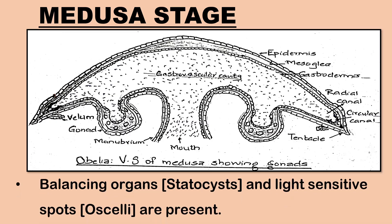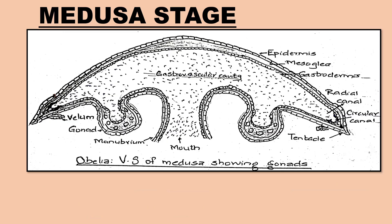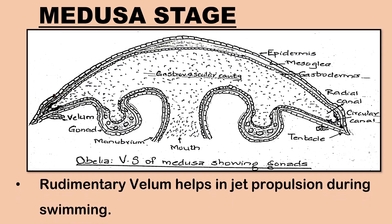At the base of the tentacles are the statocysts, which act as balancing organs, and ocelli which are the light-sensitive spots. Medusa possesses a rudimentary velum, which is a thin, circular, inward projecting fold of tissue from the bell margin. It helps in jet propulsion during swimming.